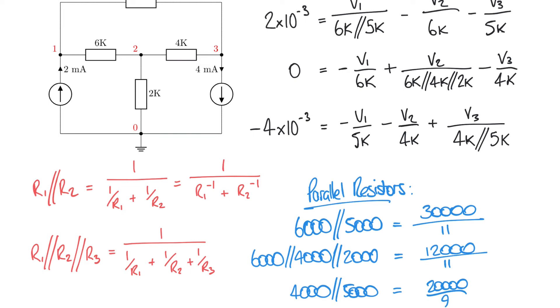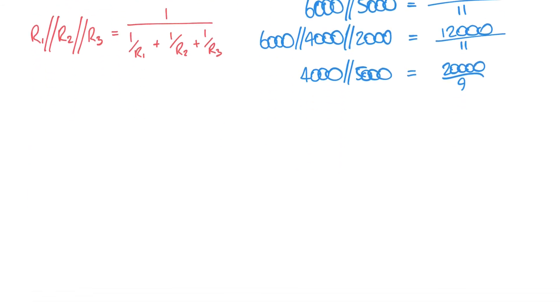We also have a case of 4k in parallel with 5k, and that gives us 20000 over 9. Notice for each of these I've retained these as rational numbers in fractional form rather than converting to a decimal, which would give us a bit of rounding error. It actually makes things a little bit easier to rearrange in just a second. Now that we've calculated these parallel resistances, let's pop those back into our three equations here. You'll notice that these parallel resistances are in the place of my shorthand from earlier.